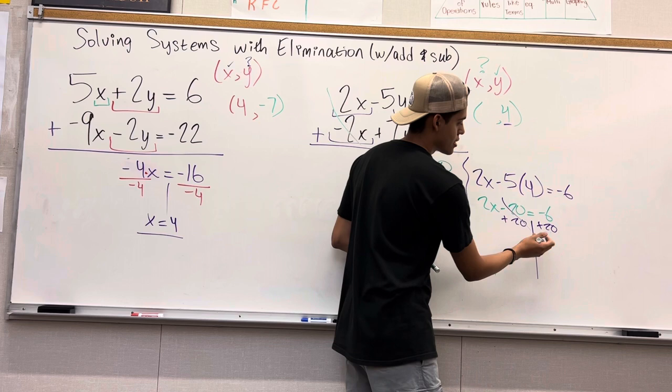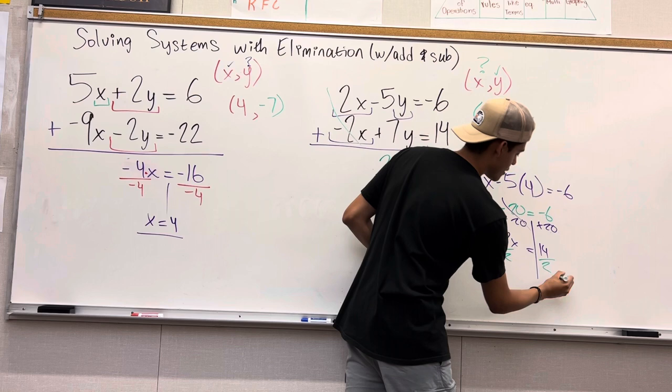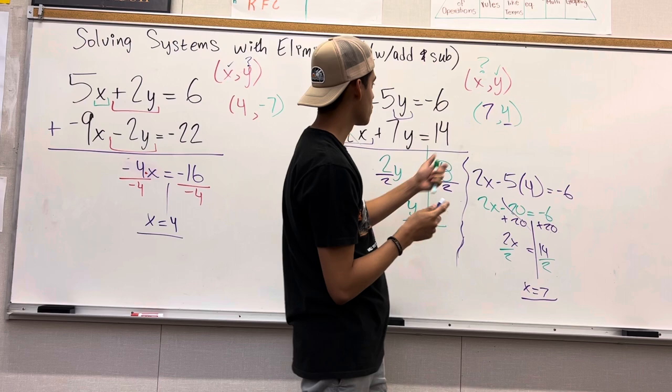2x equals negative 6 plus 20 would give you 14. We are going to leave x by itself so we divide 2 to both sides and we have 14 divided by 2. We have x equals positive 7. And there you go. We have a point where they intersect, 7 comma 4, and that is how you solve these two problems using elimination with addition.